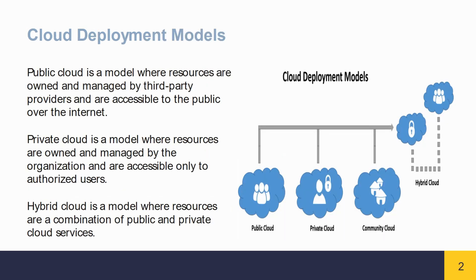Cloud Deployment Models. Public Cloud is a model where resources are owned and managed by third-party providers and are accessible to the public over the internet. Private Cloud is a model where resources are owned and managed by the organization and are accessible only to authorized users. Hybrid Cloud is a model where resources are a combination of public and private cloud services.